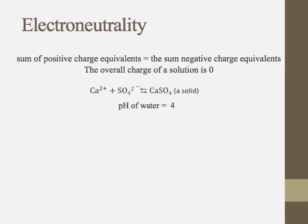Here's an example. This is a reversible reaction again. Calcium and sulfate forming a solid over here on the other side. And we know the pH of the water is four. So we've got a few different ions in the water in this solution, right? We've got the calcium ion, we've got the sulfate.